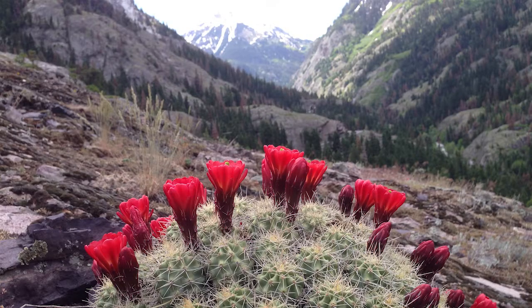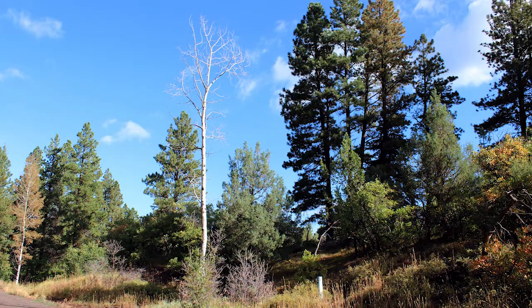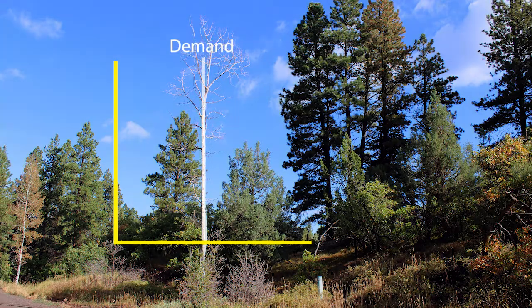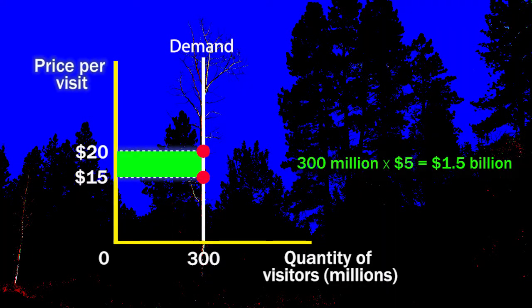The plan is to increase the price of entering the parks by $5. Although the prices vary, let's say they raise the price from $15 to $20 per visitor. If 300 million people visit the parks each year and the demand curve for park visits looks like this, then the $5 price hike would raise 300 million times $5, which is $1.5 billion in additional revenue.